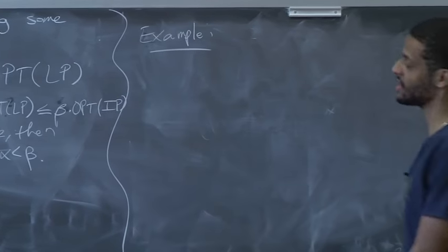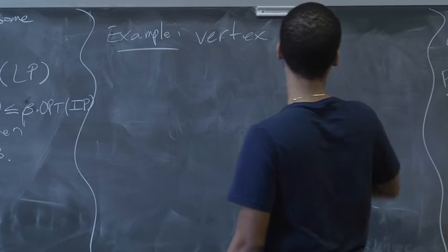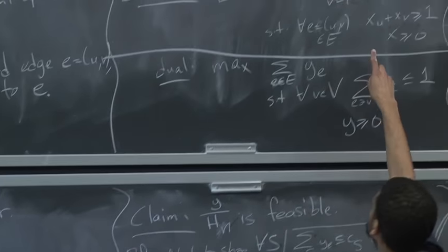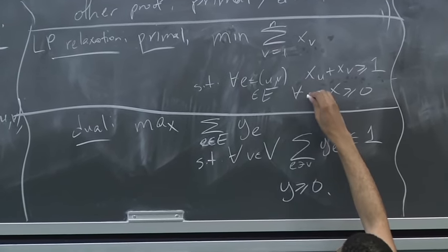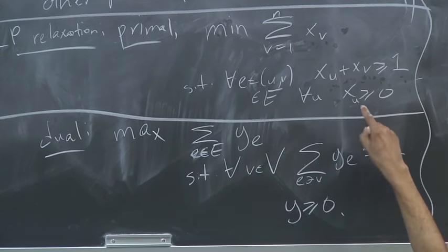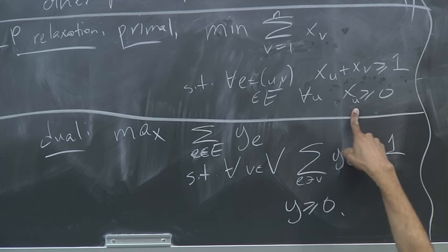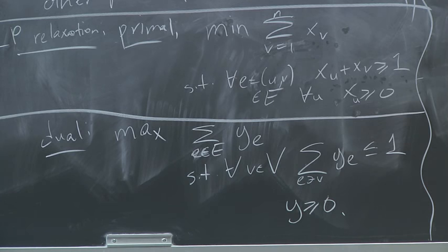Let me do vertex cover first because it's simpler. The constraint should have been that XU is either 0 or 1, and we relaxed that to a linear inequality. I claim that once you do that relaxation, you're already losing a factor of 2. There are inputs where beta is roughly 2 — where the opt for the fractional solution is only half the cost of opt for an integral solution.